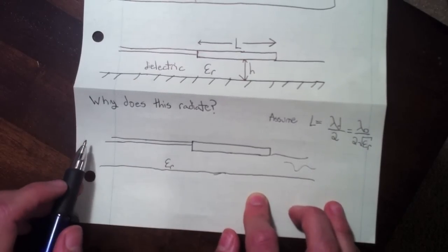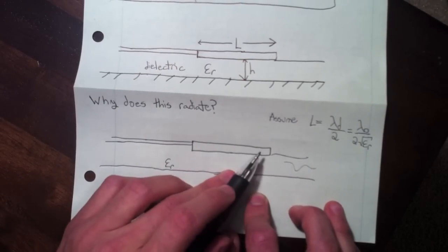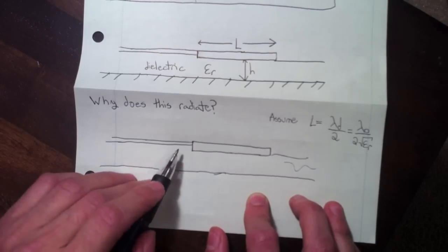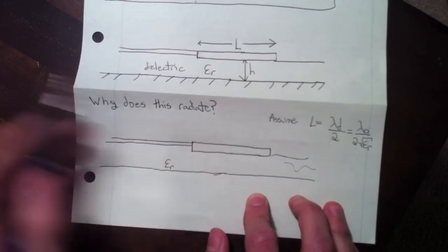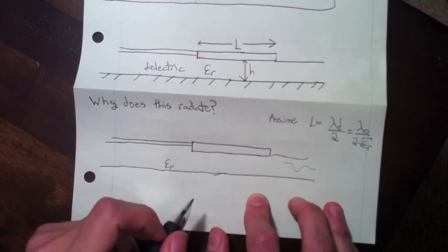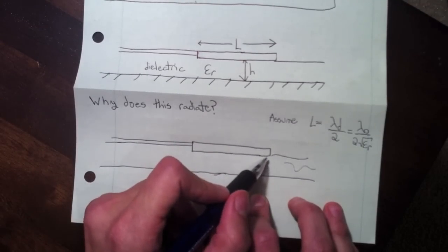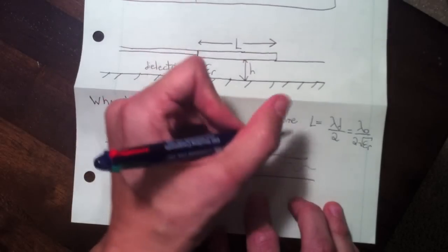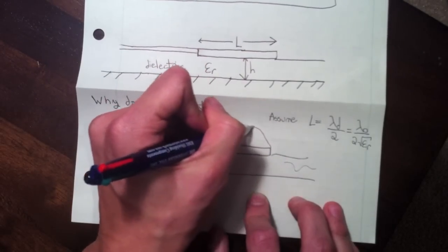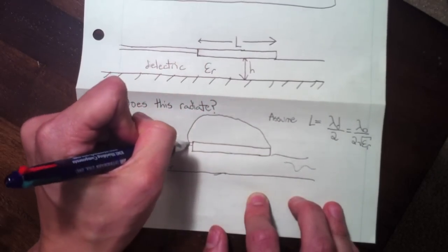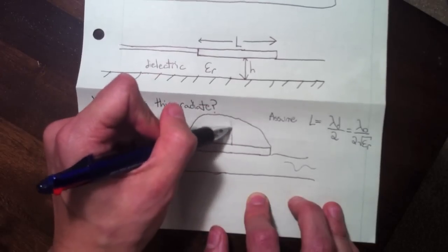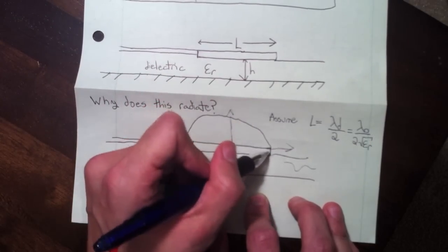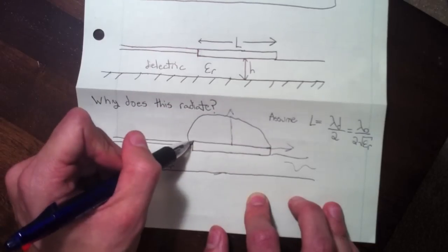Here we have a transmission line connected to this patch antenna with energy flowing down the transmission line. The patch is terminated in an open circuit, so the current has nowhere to go. If we look at a plot of the current over half wavelength, it'll be a peak in the center, zero here because the current has nowhere to go, and half wavelength away it'll also be zero.